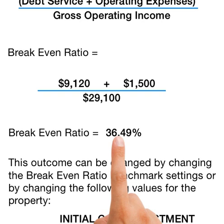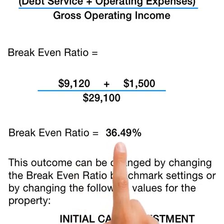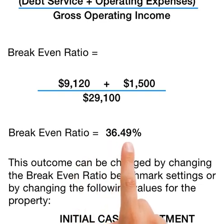We end at a break-even ratio of 36.49% for this property. Now, what does that mean? Is 36.49% good or bad? Well, the lower the break-even ratio, the better. It typically ranges from 70% to 100%, and most lenders will look for a break-even ratio of 85% or less. In this case, we have a break-even ratio of 36.49%, which is well below 85%, so we are in good shape.